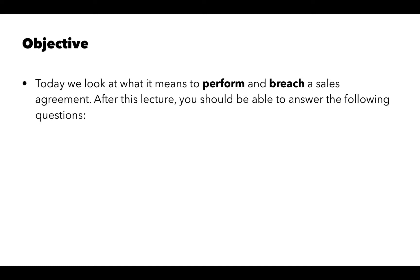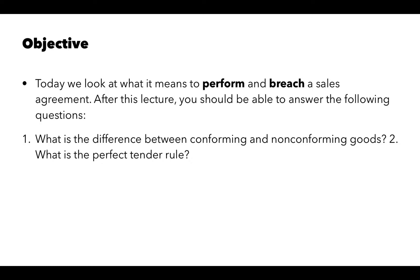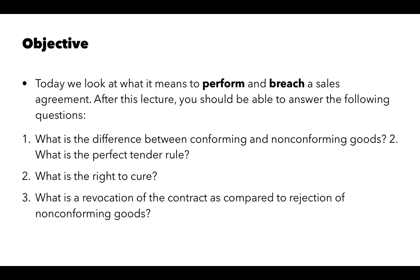After this lecture, you should be able to answer the following questions: What's the difference between conforming and non-conforming goods? What is the perfect tender rule? What is the right to cure? What is a revocation of the contract as compared to rejection of non-conforming goods? And finally, what do we mean by the notion of commercial impracticability?